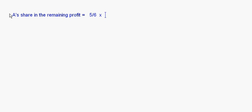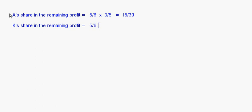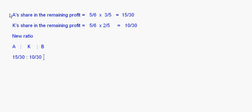A's share in the remaining profit will be 5/6 multiplied by 3/5, which gives 15/30. Similarly, K's share in the remaining profit will be 5/6 multiplied by 2/5, which gives 10/30. So the new ratio of A to K to B is 15/30 to 10/30 to 1/6. Taking a common denominator of 30, that becomes 15/30 to 10/30 to 5/30.